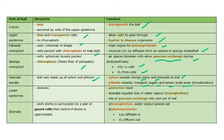The lower epidermis has stomata and is also a protective layer. Stomata regulate the loss of water vapor by transpiration and are the site of gaseous exchange into and out of the leaf. Each stoma is surrounded by a pair of guard cells that control whether the stoma is open or closed — serving two functions: transpiration, where water vapor passes out, and photosynthesis, where carbon dioxide diffuses in and oxygen diffuses out.